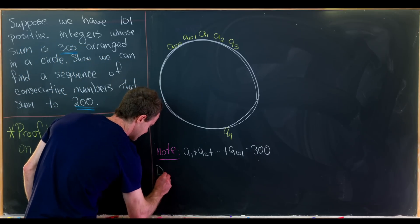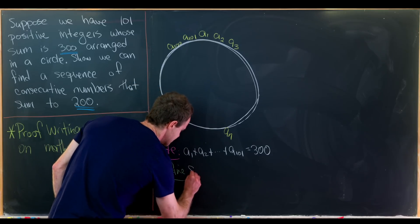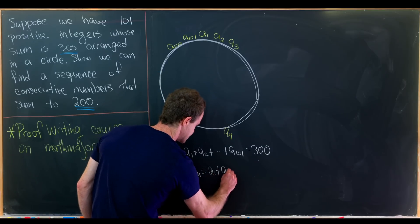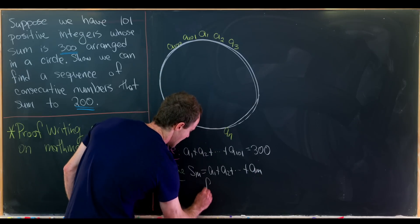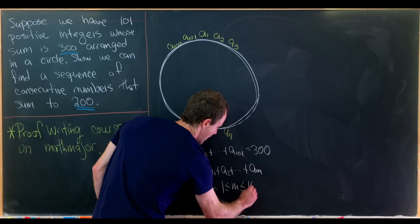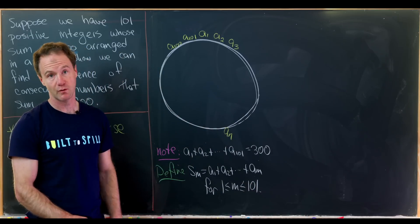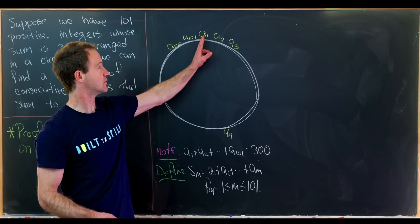Because a sequence of partial sums is a special case of a consecutive sequence. So let's do that down here. So I'll just put, let's define s sub m equal to a sub 1 plus a sub 2 plus all the way up to a sub m. And this is going to be true for m between 1 and 101.